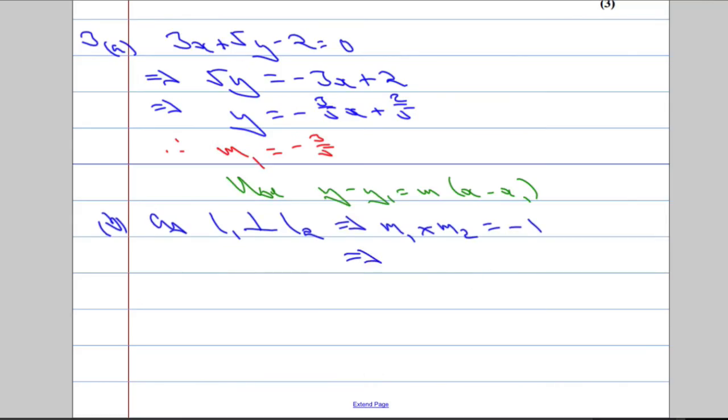Which means that m2 is going to equal negative 1 over m1, which is negative 1 over the gradient we had, over negative 3 over 5.